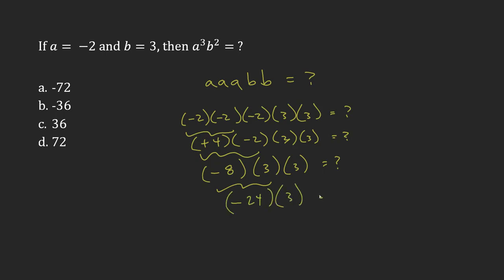So I'm almost there. Now I'm dealing with a negative times a positive. That gives me a negative. 24 times 3 is 72. So my answer is negative 72, which is a.